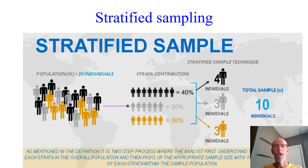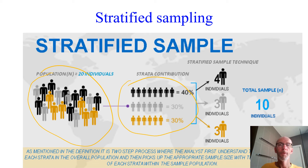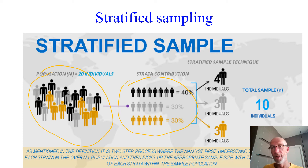Another example: step one, determine your strata — blacks, grays, browns. Step two, work out your percentages — 40% of our population is blacks, 30% grays, 30% browns. Step three, work out how big your sample is going to be. Step four, come up with a method that gives each member of the strata an equal chance of being selected, so that our sample is proportionally representative of each strata — that's stratified random sampling.